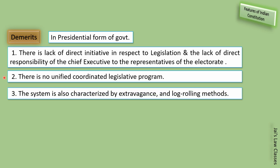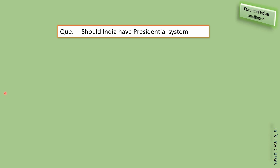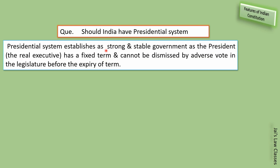The presidential system is also characterized by extravagance and long-ruling methods — ye ek bahut bada demerit hai. A common question: should India have a presidential form of government? The presidential system establishes a strong and stable government as the president has a fixed term and cannot be dismissed by an adverse vote in the legislature before the expiry of term.